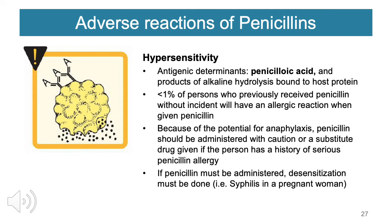The major antigenic determinant for penicillin allergy is penicilloic acid, a product of alkaline hydrolysis bound to host protein. Less than 1% of persons who previously received penicillin without incident will have an allergic reaction when given penicillin again. Because of the potential for anaphylaxis, penicillin should be administered with caution in patients with a history of serious penicillin allergy — either test the patient first or choose another drug. If penicillin must be administered, desensitization must be done.